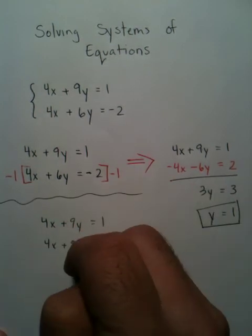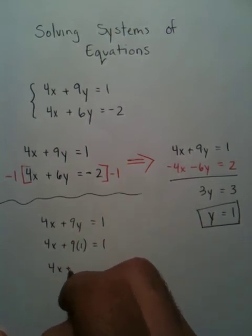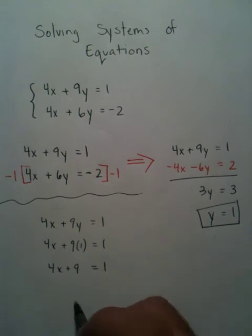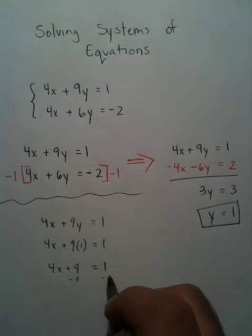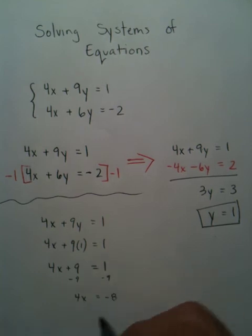I know for a fact that y equals 1, so this makes my math really easy. All I've got to do is solve for x. Inverse operation to both sides—4x equals negative 8. Therefore, x equals negative 2.